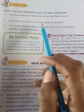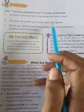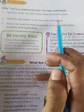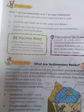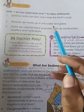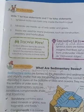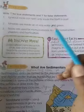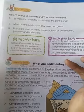The next statement says rocks are made up of only water and gases. Minerals are not made of just water or gases — minerals have a definite chemical composition. So this statement is false.